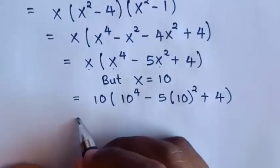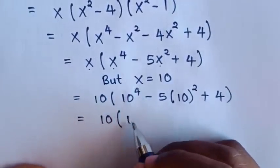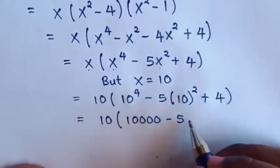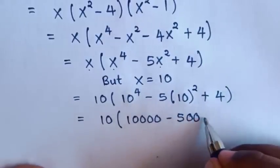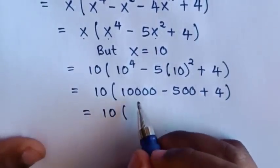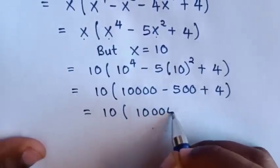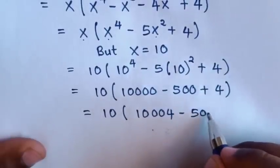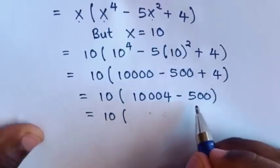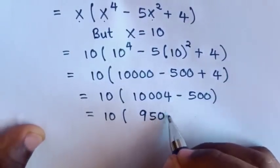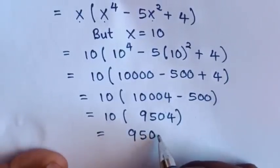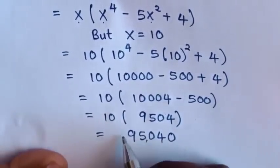So this equals 10 times (10,000 minus 500 plus 4). That is 10 times 9,504, which equals 95,040. So this is our final answer.